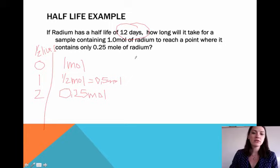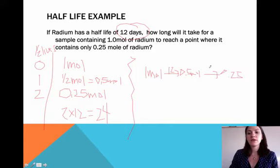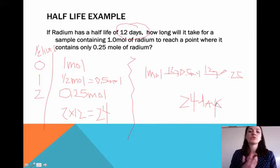The second way you can do this, same process: two half-lives times 12 days equals 24 days. You start out with one mole. After 12 days, you have 0.5 moles. After another 12 days, you have 0.25 moles. So you can add up 12 days and 12 days to get 24 days. Two different ways of showing your work.